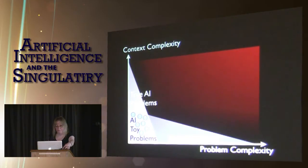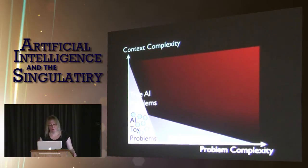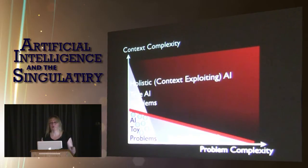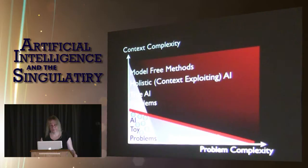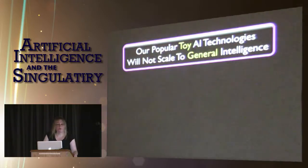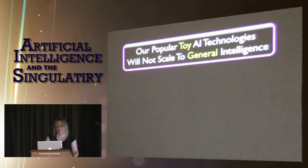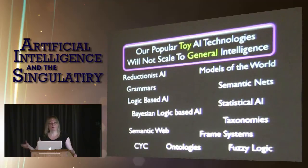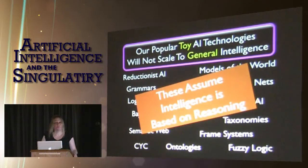We had multiple successes in AI toy problems, but they have all been false promises, because we can't get past into the true AI problem area. So we should be using what I call holistic, context-exploiting AI, or model-free methods — a group of methods we can use for this purpose. Our popular toy AI technologies will not scale to general intelligence. We've been using them for 60 years, and many are still in common use on limited domain AI problems, but they all assume that intelligence is based on reasoning rather than intuition.